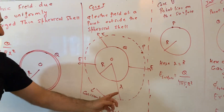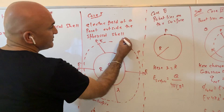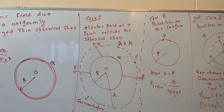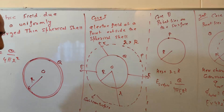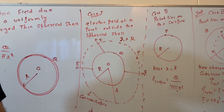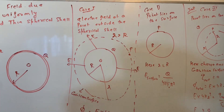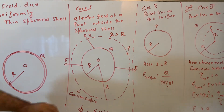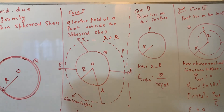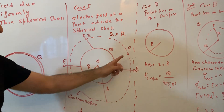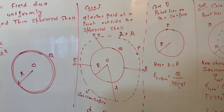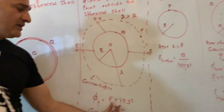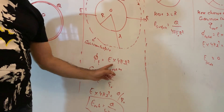The first case is a point outside the spherical shell, where r is greater than the radius R. The first step is to draw the Gaussian surface. Here we draw a spherical Gaussian surface because the electric field at all points on the Gaussian surface is constant — they are all at the same distance from the center — and the electric field and normal make an angle of 0 degrees with each other.